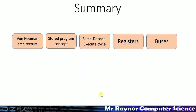To summarize: we've talked about Von Neumann architecture, also known as the stored program concept — storing both the program and the data in the same memory and fetching instructions one by one. We've looked at the fetch-decode-execute cycle in detail, which constantly loops and repeats in the CPU. We should be able to name and explain the five key registers and the three different buses. Hopefully you found that useful.